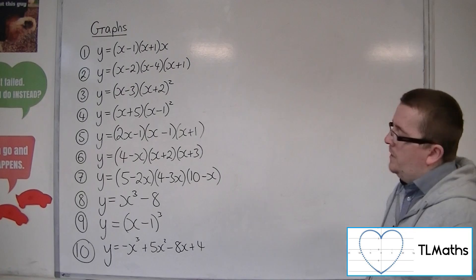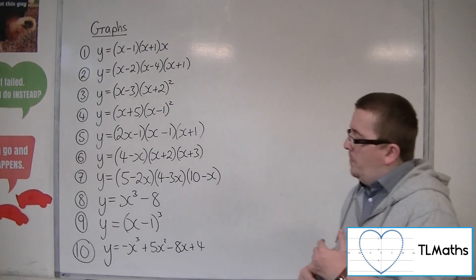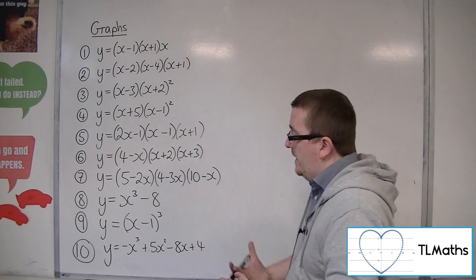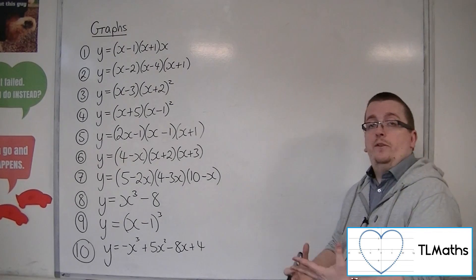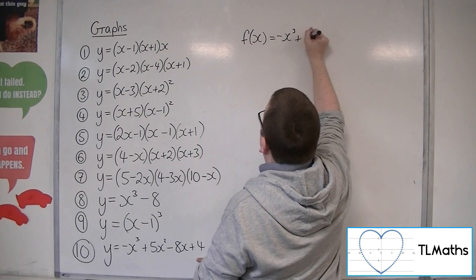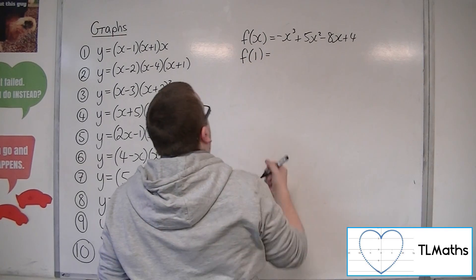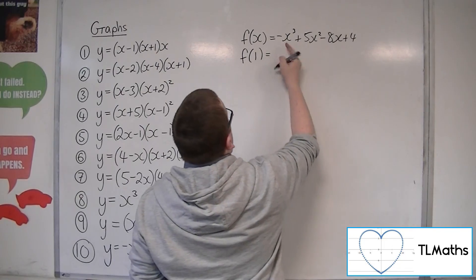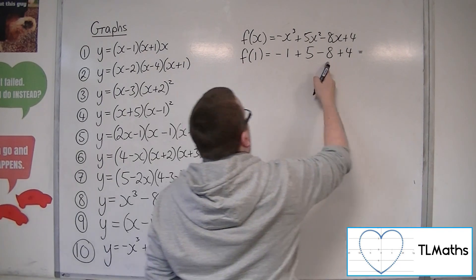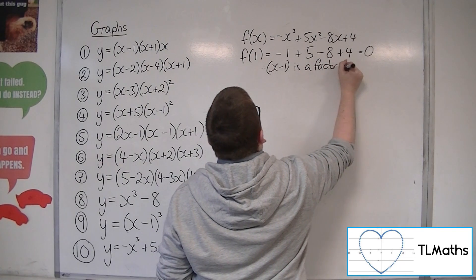The last one is number 10: y is equal to minus x-cubed plus 5x-squared minus 8x plus 4. To sketch it, we want to factorise it using the factor theorem. Calling it f(x), we try f(1): minus 1 plus 5 minus 8 plus 4 equals 0. So x minus 1 is a factor of f(x).